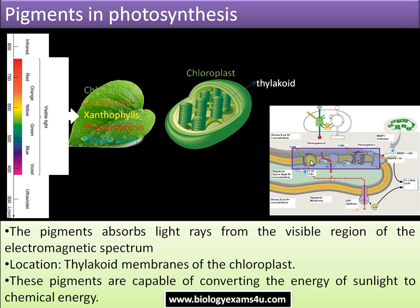These pigments convert light energy into chemical energy as ATP and NADPH — we call this the light-dependent reaction of photosynthesis. These are amazing chemicals capable of converting light energy from the sun into ATP and NADPH, which is then utilized for the formation of glucose in the dark reaction, or light-independent reaction.